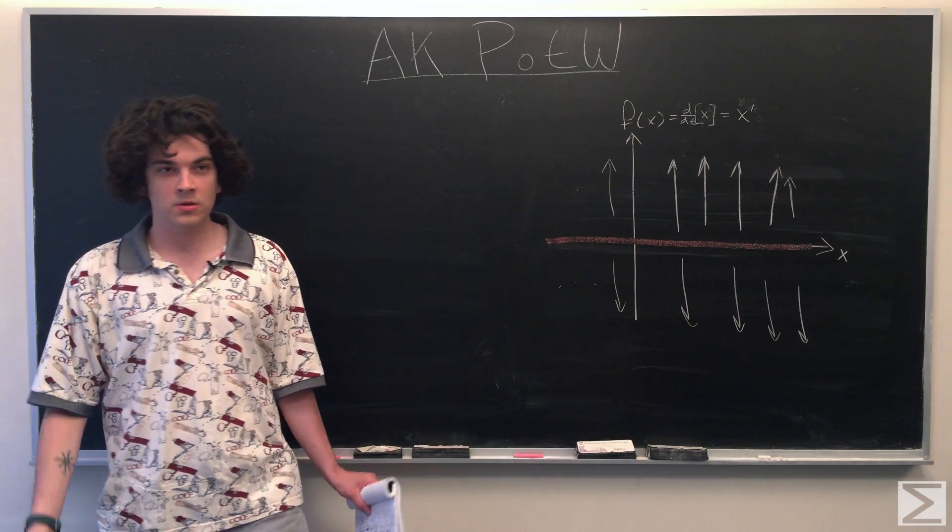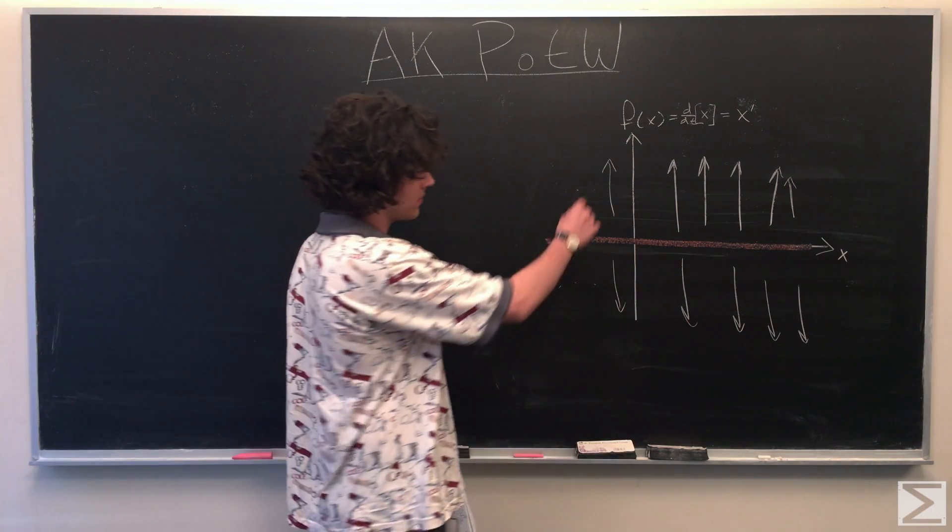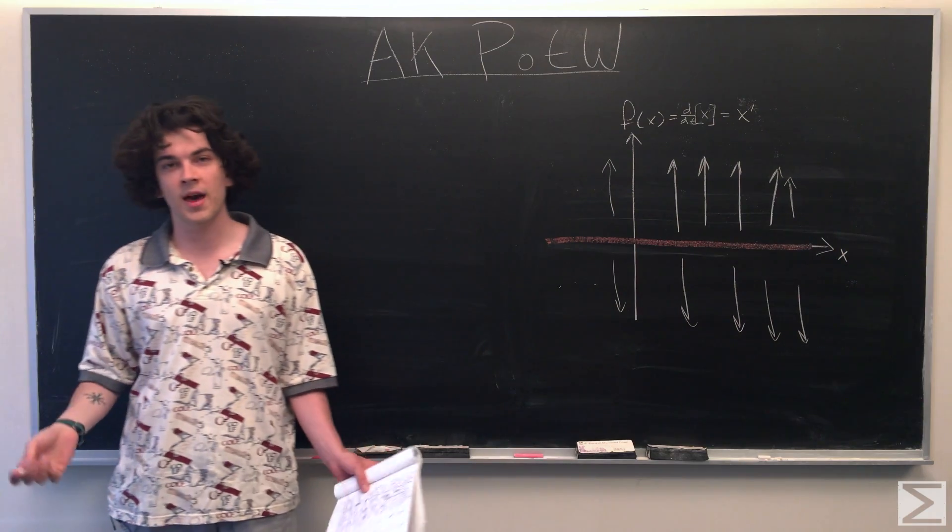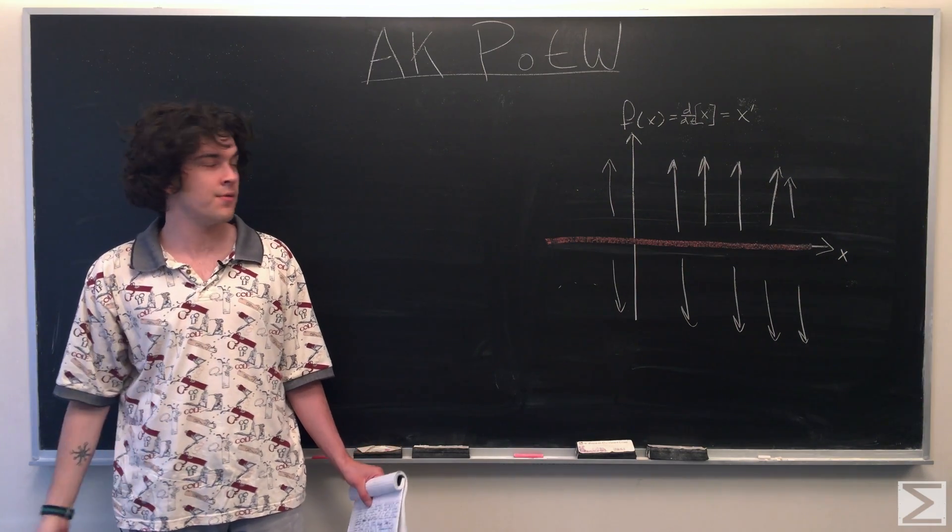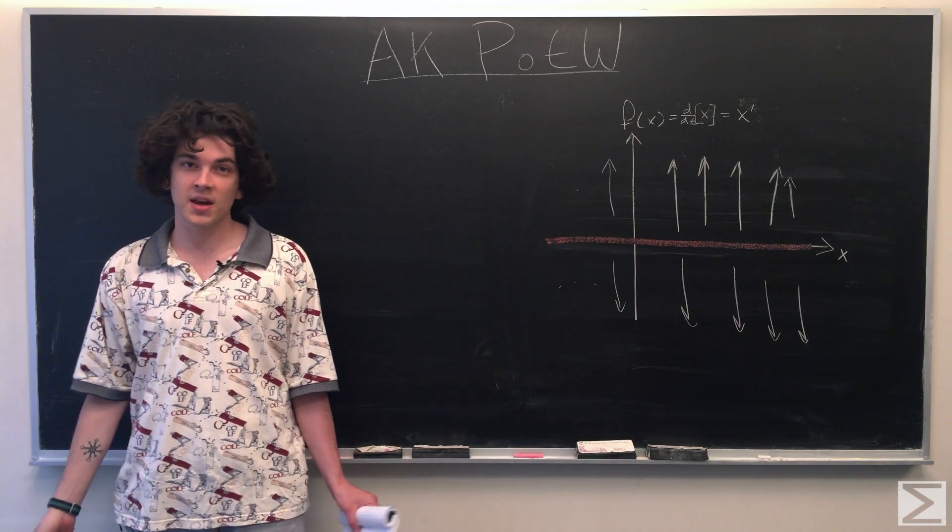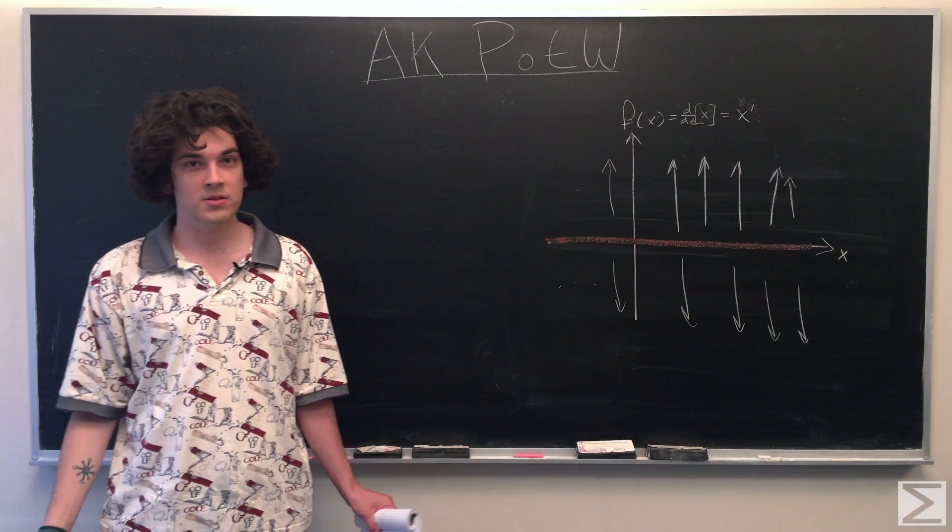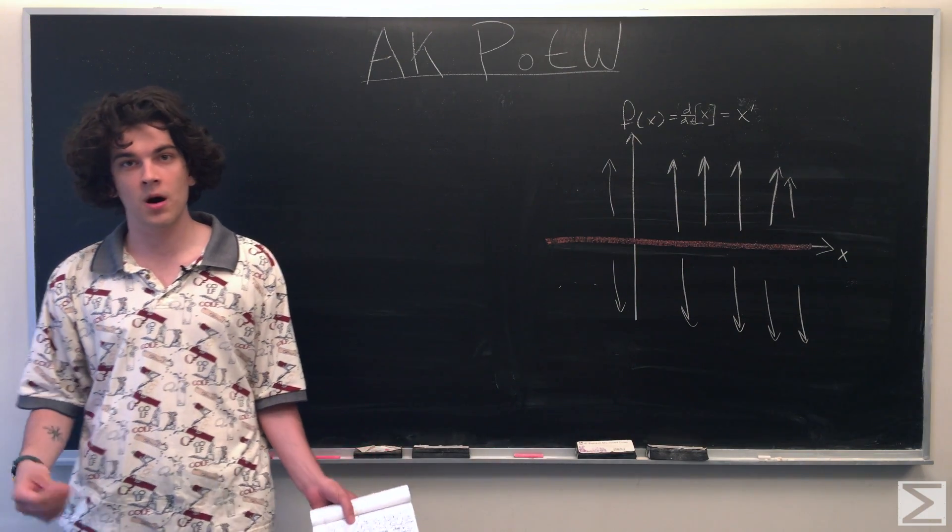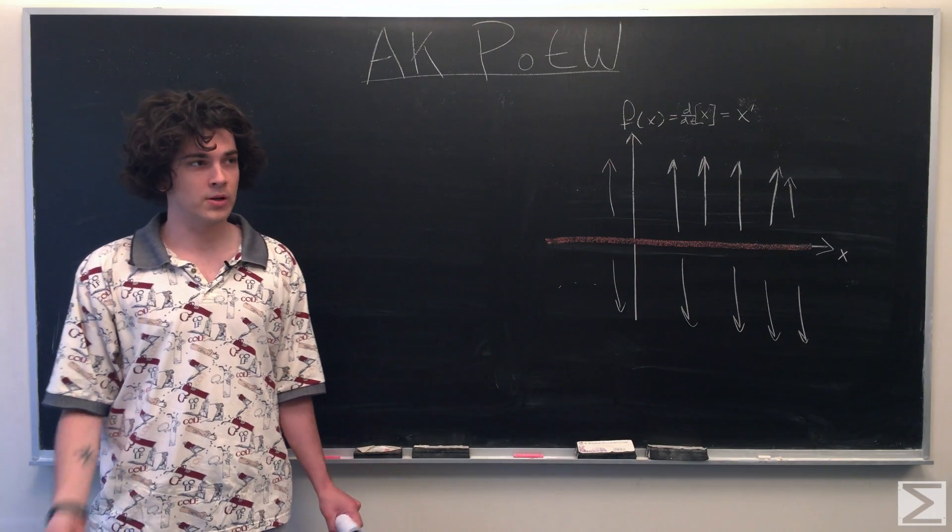So usually we look at things in two dimensions, the x-axis being x and y-axis being f of x. In this case, the same thing applies except f of x is the rate of change with respect to time of our x, of our position.